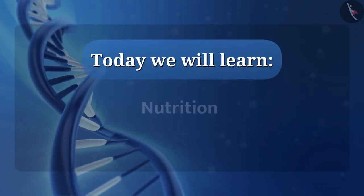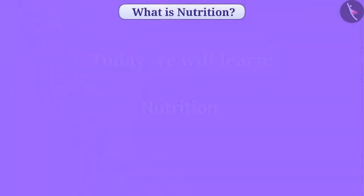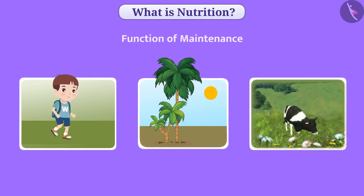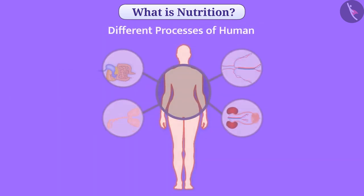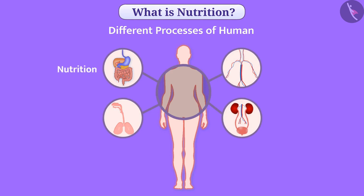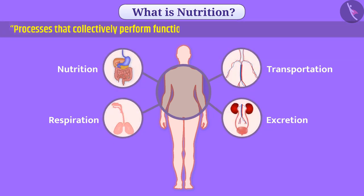Today we will learn about nutrition. In living beings, the function of maintenance should be carried out continuously so that they can remain alive. For this function, different processes like nutrition, respiration, transportation, and excretion work collectively. Processes that collectively perform the function of maintenance are called life processes. In this video, we will get information about nutrition.